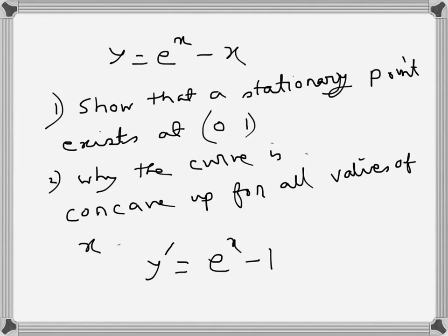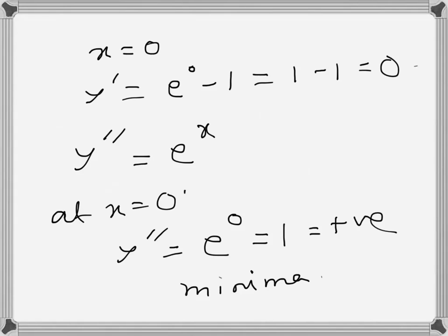Now the second part is why the curve is concave up for all values of x. That's actually obvious here because concave up is when y'' is positive, and concave down is when y'' is negative.